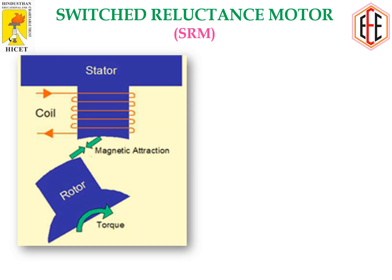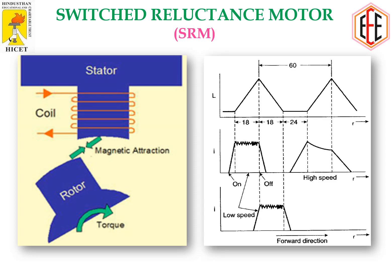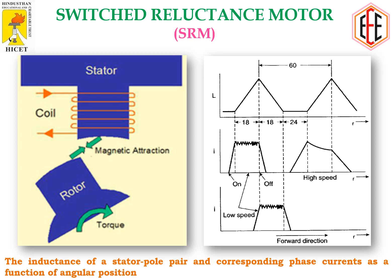Next, I will show how the rotor is aligned with the excited stator. The stator has a coil — when it is energized, it acts as an electromagnet. The rotor has no permanent magnet and no winding; it is a simple steel-laminated core structure, so it is attracted by the excited stator winding. The inductance of the stator pole and the corresponding phase current vary as a function of angular position as the rotor moves.